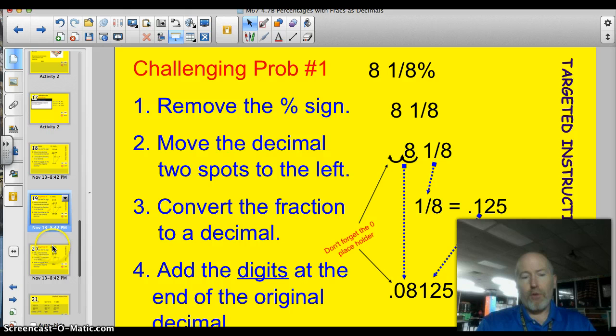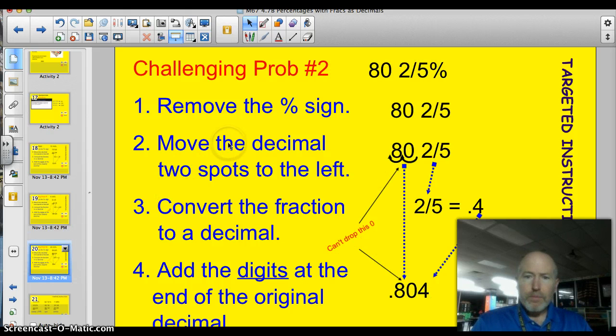Here's a second challenging problem before I have you try some on your own. This one here has a 0 here at 80 and 2 fifths percent. So let's just run the steps. First of all, get rid of the percentage sign. Now we've got 80 and 2 fifths. Second, move the decimal two spots to the left. 1, 2. Now we have 0.80 and we have 2 fifths.